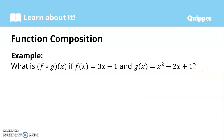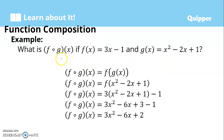This is very easy. Let's have this example: What is f composed of g of x if f of x equals 3x minus 1 and g of x equals x squared minus 2x plus 1? So simply, f composed of g of x is just equal to f of g of x. Meaning, in f of x, instead of x, we will replace it with g of x. So we have f of — what is g of x? This one. So we substitute that in.